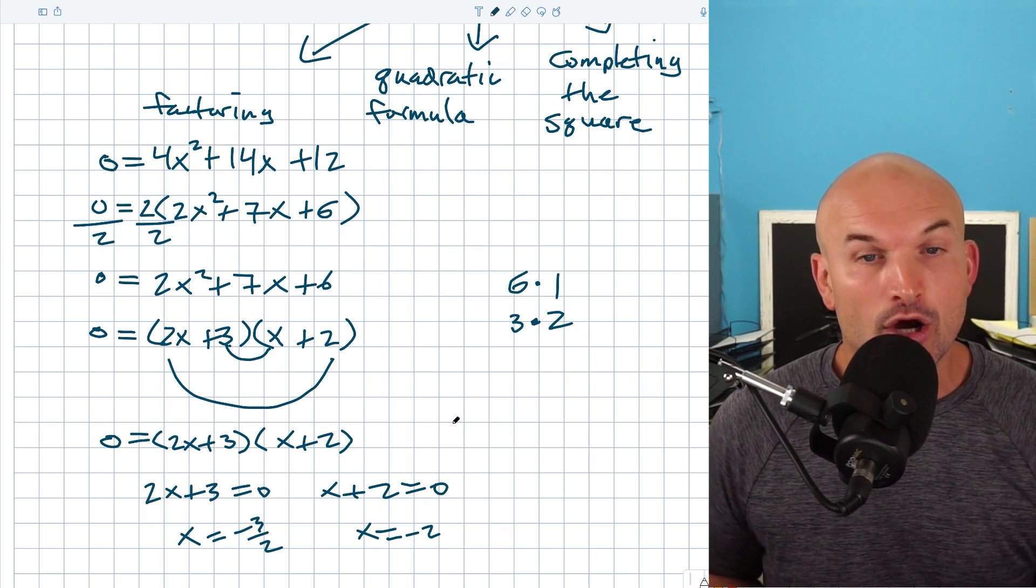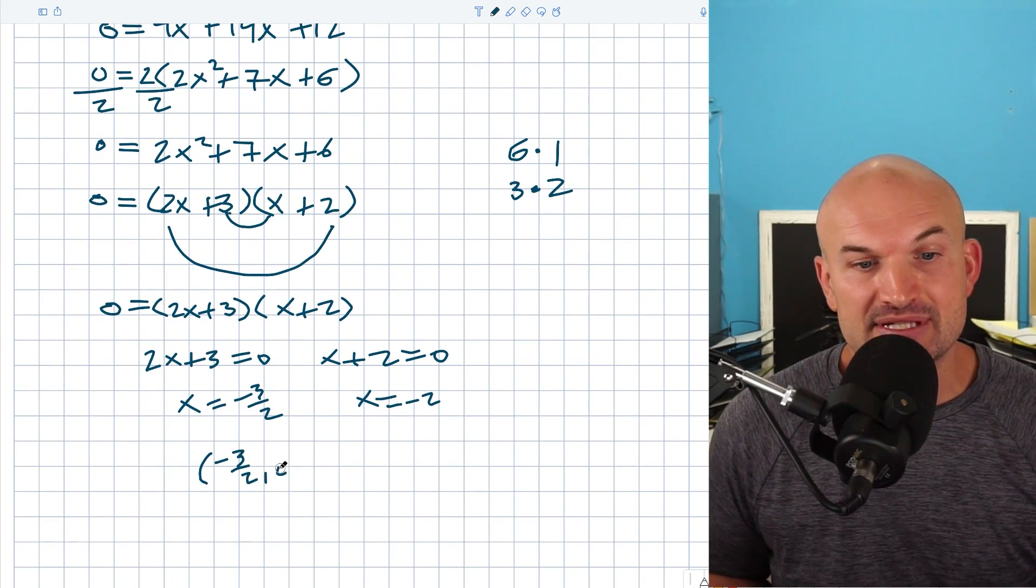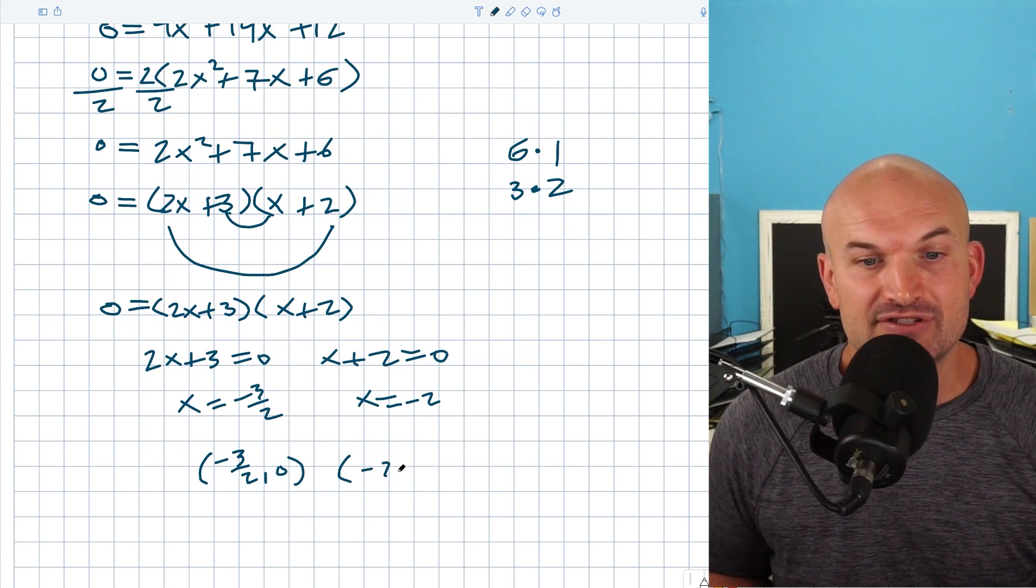So in this example, for this quadratic, we actually have two x-intercepts. We have (-3/2, 0), and we also have (-2, 0).